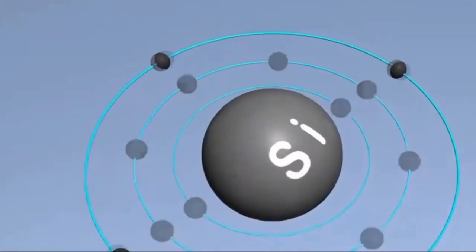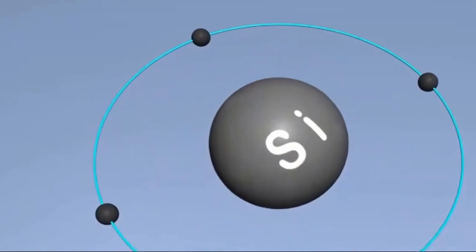To understand the P-N junction, we need to start with the structure of silicon. Each silicon atom has four valence electrons in its outer shell.